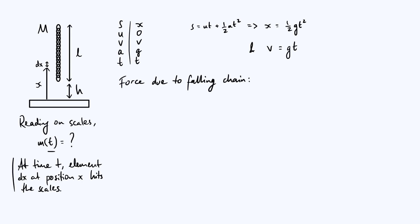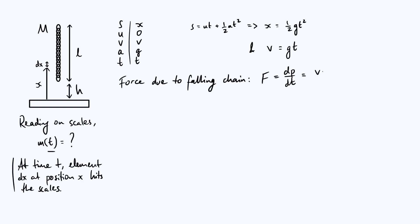To get the effective mass as a function of time we need to know how much force each little bit of the chain exerts on the scales as a result of its impact. We use Newton's second law in its full form: force is rate of change of momentum, F = dp/dt. Each little element of the chain hits the scales with an initial momentum dp and that momentum is reduced to zero in a time dt. So we can write dp as mass times velocity — the velocity is v and the mass element is dm — giving F = v · dm/dt.